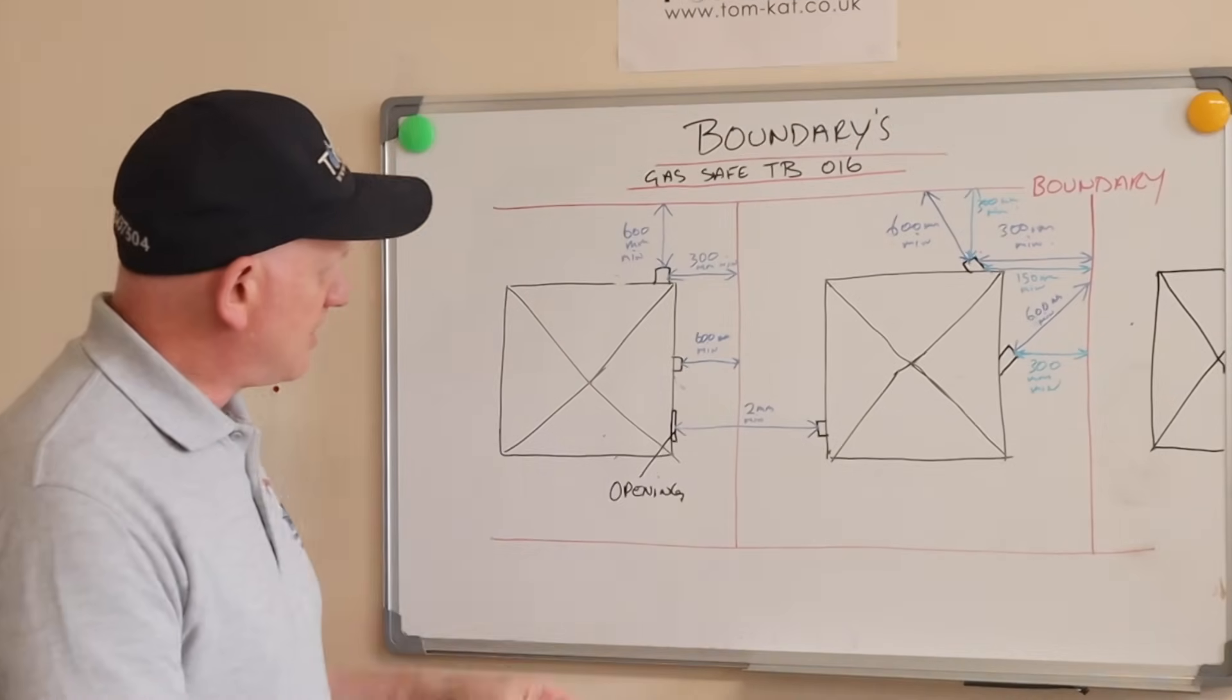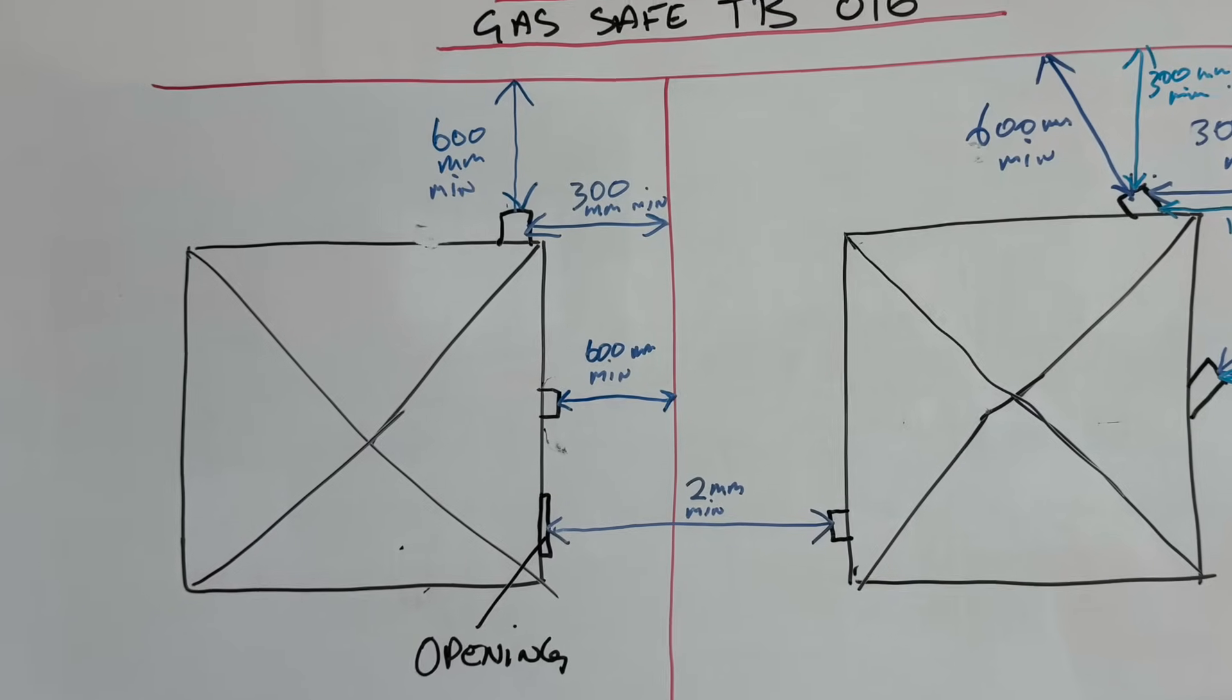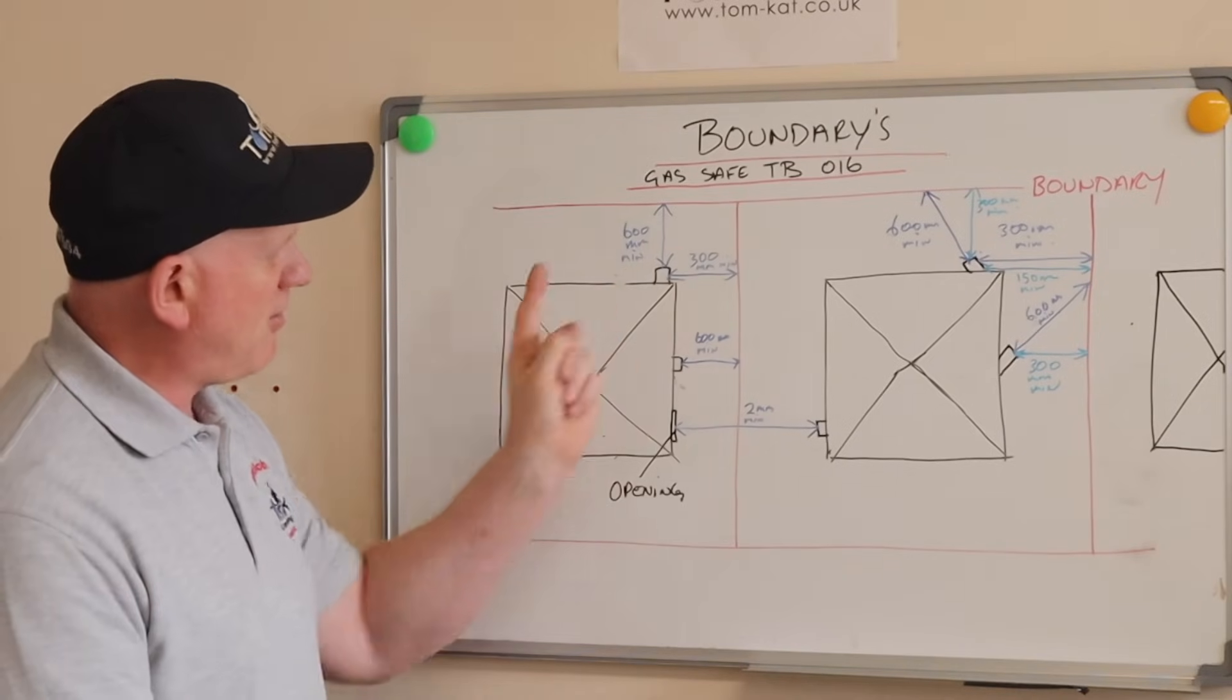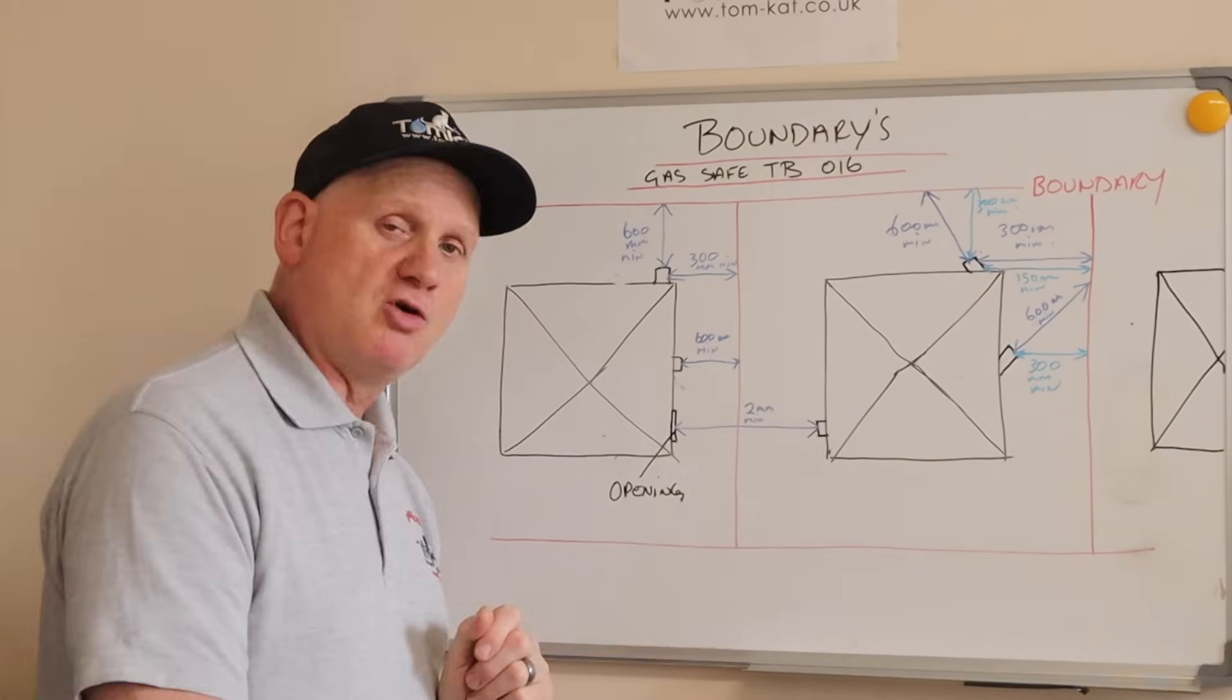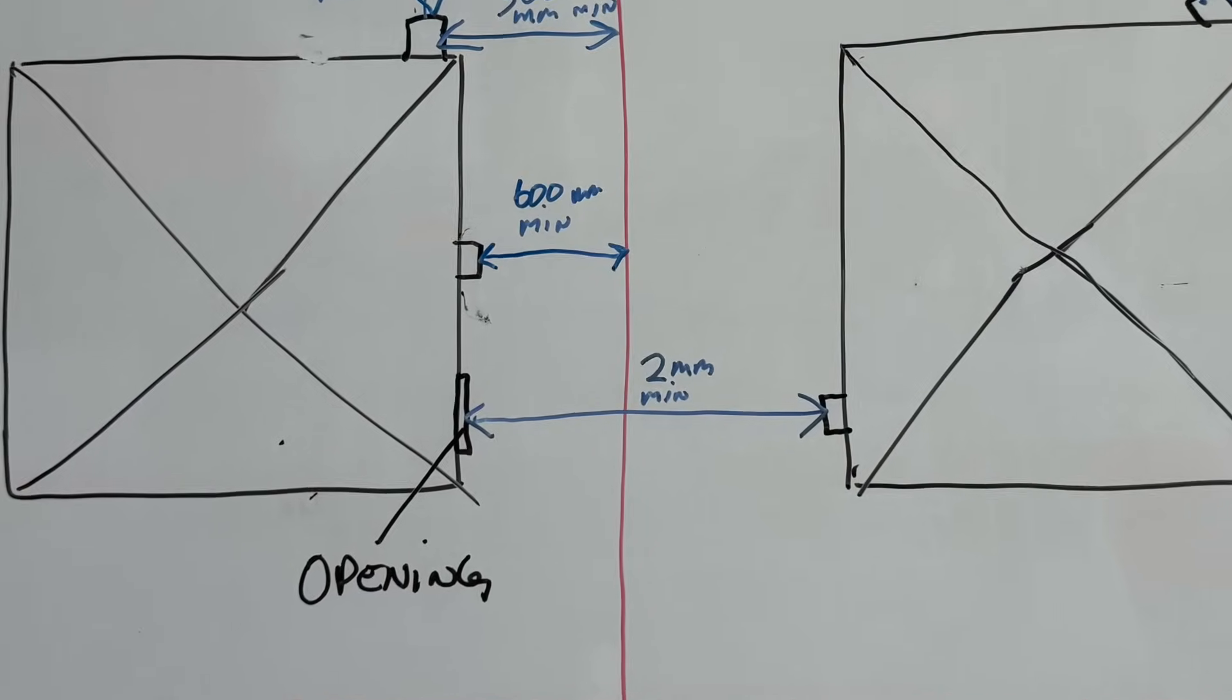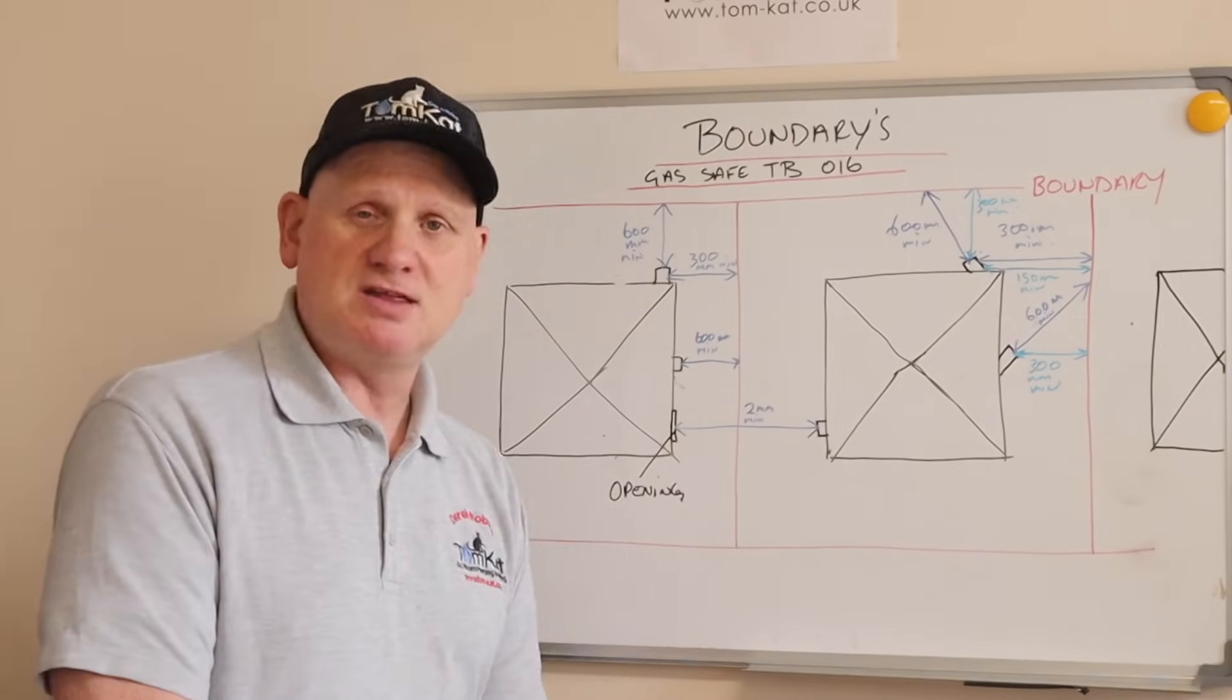Now, according to the building regs, if the flue is facing a boundary, we need a minimum of 600mm. If the flue is parallel to the boundary, from the side to the boundary, we need a minimum of 300mm. And if we are directly across from an opening into the building, window, door, then we need a minimum of 2 metres.